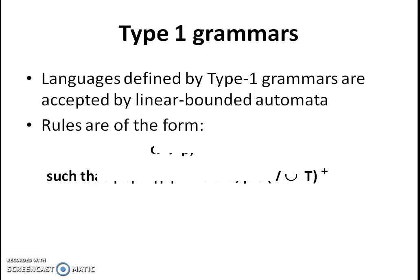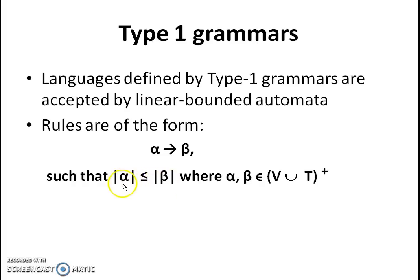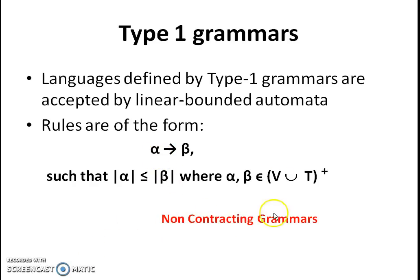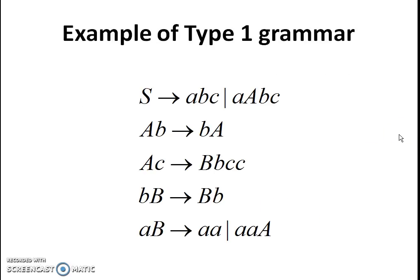For Type 1 grammar, the restriction imposed is that the length of the LHS should be less than or equal to the length of the RHS — that is, the length of alpha should be less than or equal to the length of beta. Since the length of LHS is less than or equal to the length of RHS, these are also known as non-contracting grammars. The length of LHS of each and every production is less than or equal to that of the RHS; therefore, this is a Type 1 grammar.